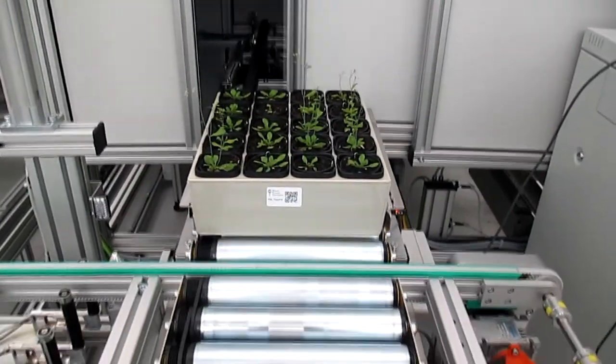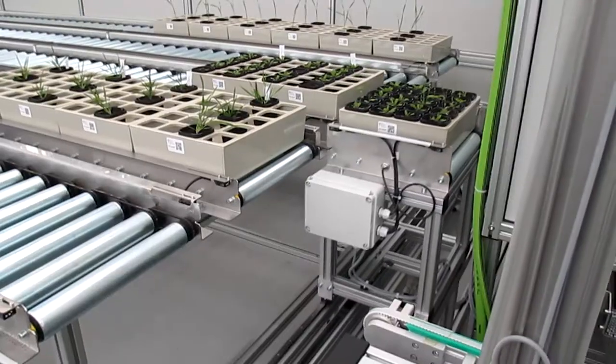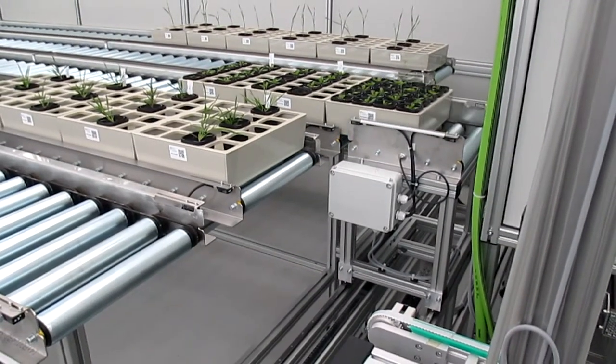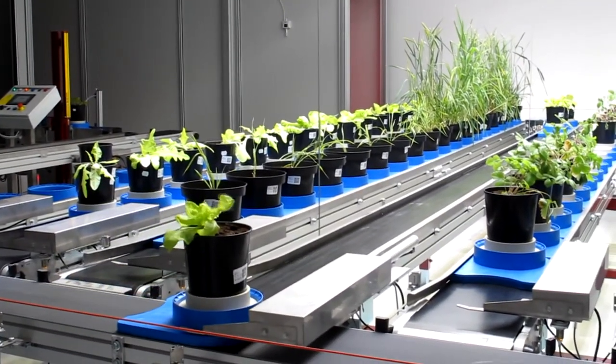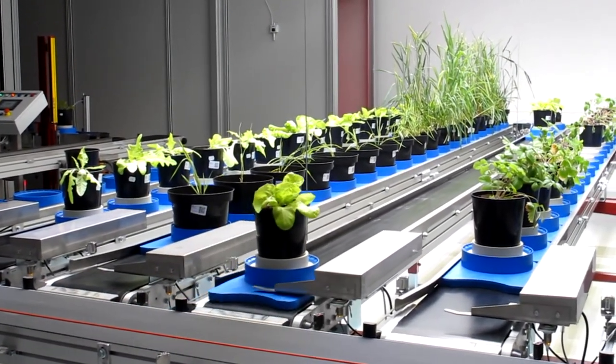PSI offers both small and large systems which may be connected to plants on a conveyor in a cultivation area. Systems can be optimized for the study of a wide variety of monocots and dicots from Arabidopsis to crop species.